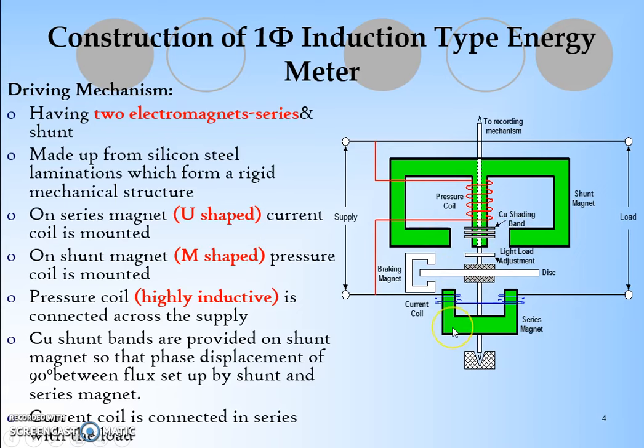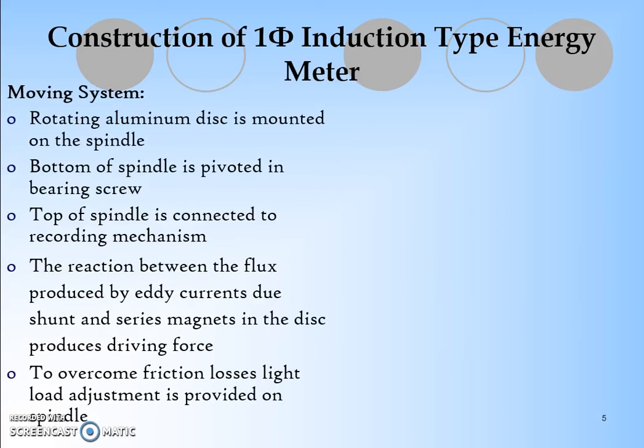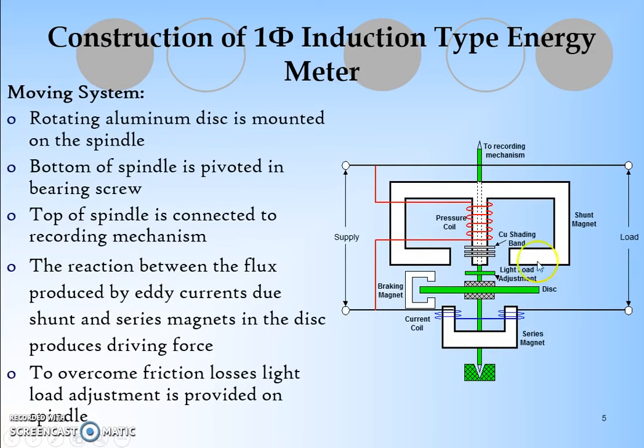Current coil is connected in series with the load. Again, the moving system is shown in green. It is how the disc is going to rotate. The rotating aluminum disc is mounted on the spindle. Bottom of spindle is pivoted in the bearing screw. Top of the spindle is connected to the recording mechanism which will give the gear lines. The reaction between the flux produced by eddy current due to shunt and the series magnet will make the disc rotate. To overcome the friction loss, light load adjustment is provided on the spindle.